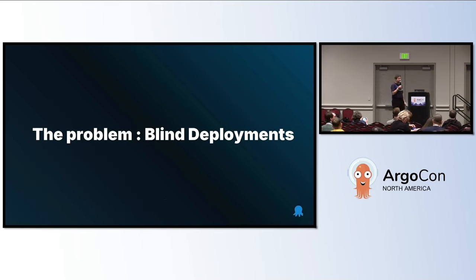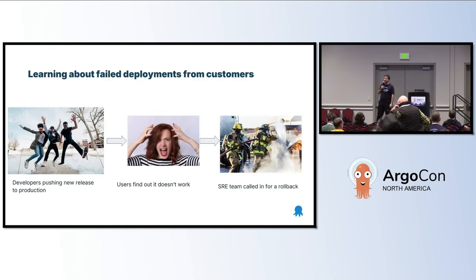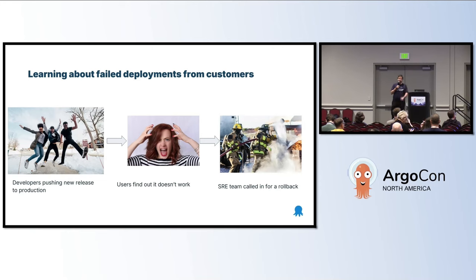Let's start with a problem. This should be a familiar story to everybody. Developers say, oh, we have the best release ever. They deploy it. When something bad happens, users are complaining. And then somebody — either the developers or you — has to go and fix the mess. Super familiar?